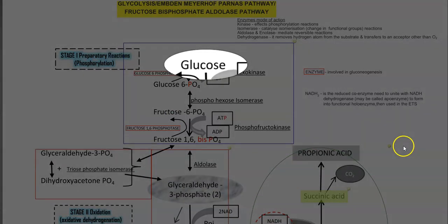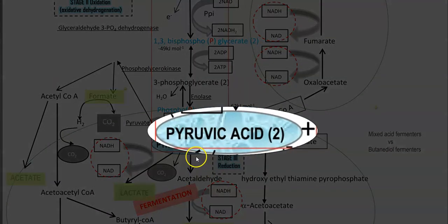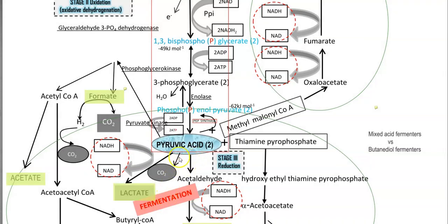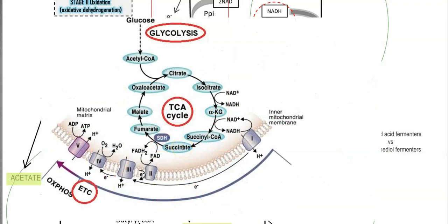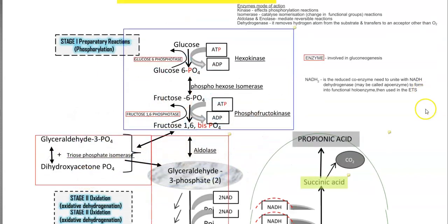The substrate for this cycle is glucose. It finally ends in the production of pyruvic acid, which can be channeled into the fermentation process, or pyruvic acid can be further converted into acetyl-CoA and the TCA cycle will operate. After that, whatever reduced equivalents — NADH₂ — synthesized in glycolysis as well as in the TCA cycle are all channeled into the electron transport chain to produce ATP, referred to as oxidative phosphorylation.